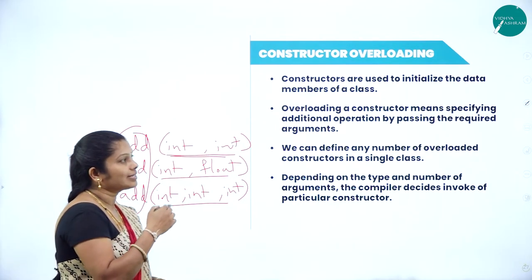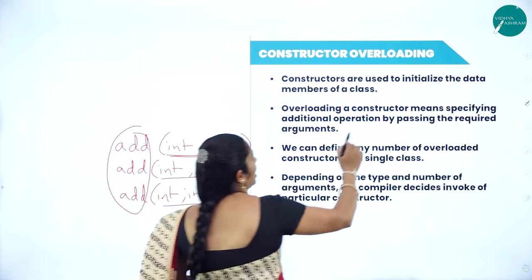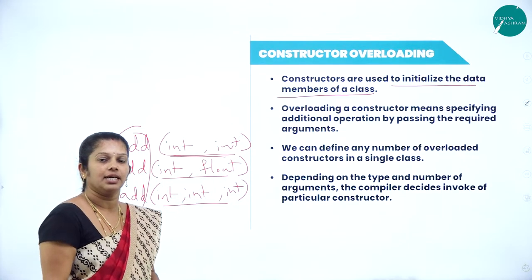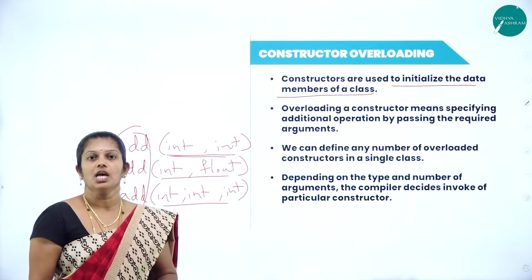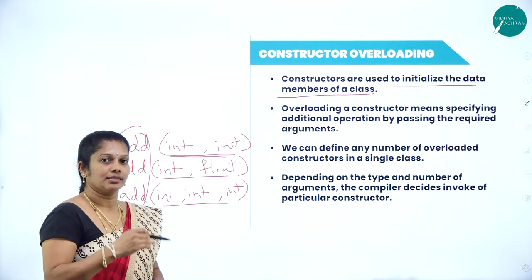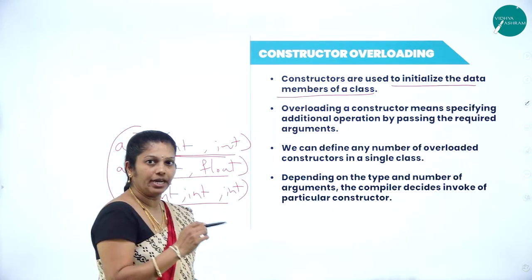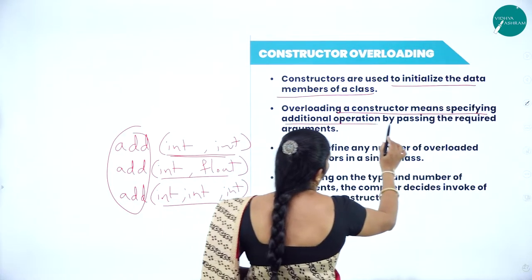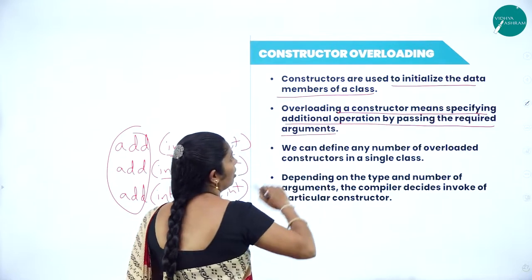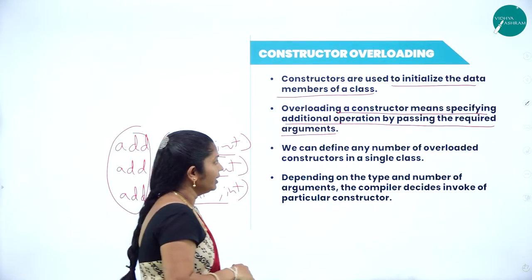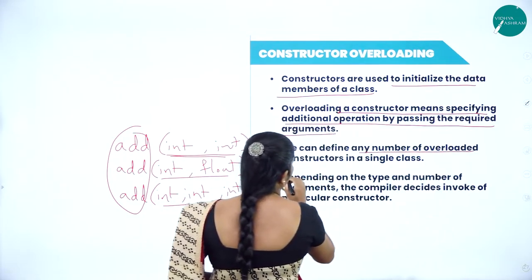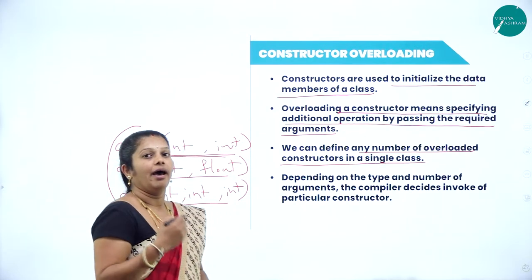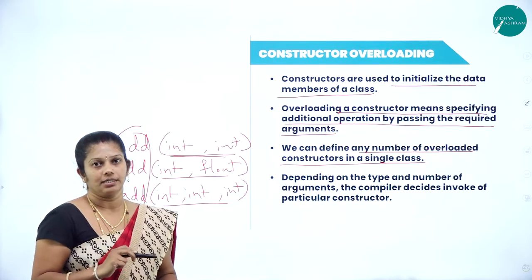What do you mean by constructor overloading? When common constructors are used to initialize the data members of a class — constructors are used for initialization, and they execute automatically when we create an object of a class — overloading a constructor means specifying additional operations by passing the required arguments. We can define any number of overloaded constructors in a single class, and depending upon the argument, that particular constructor will execute.